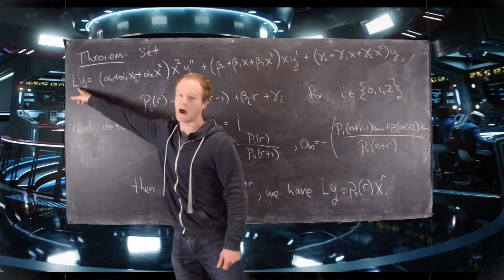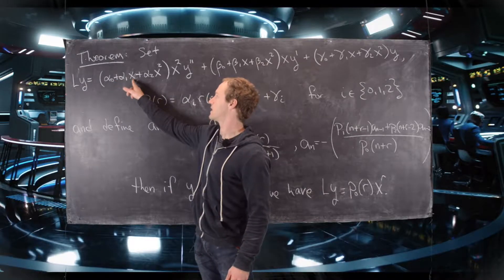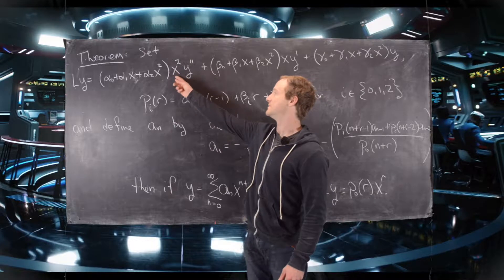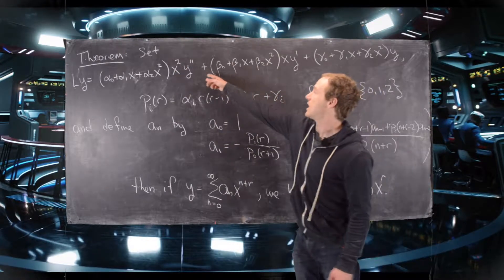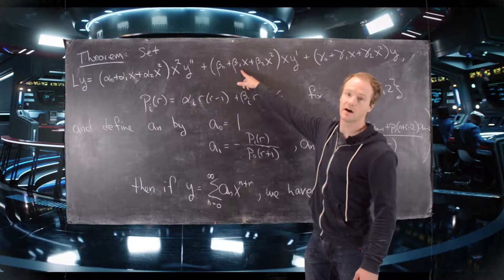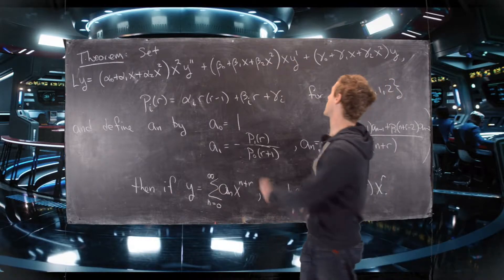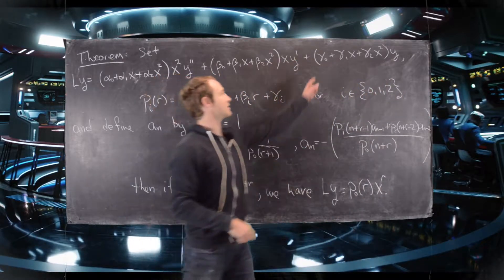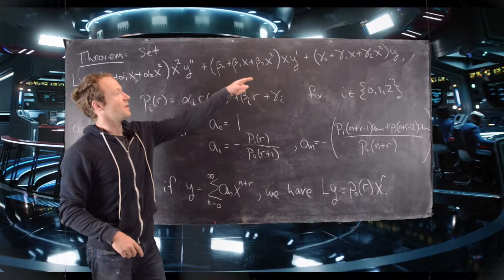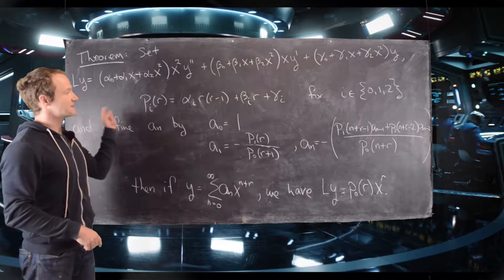We set L(y), where L is our differential operator, equal to alpha-naught plus alpha-1 x plus alpha-2 x-squared — a quadratic polynomial — times x-squared y-double-prime, plus another quadratic polynomial with coefficients beta-naught, beta-1, and beta-2 times x times y-prime, and then finally another quadratic polynomial with coefficients gamma-naught, gamma-1, and gamma-2 times y. That's our differential operator, and then we need some more notation.